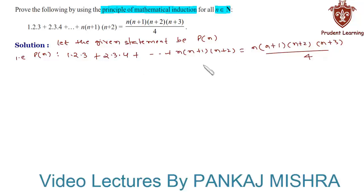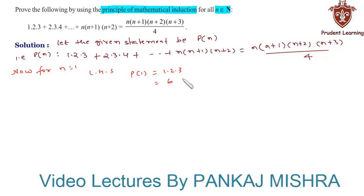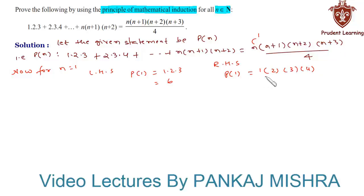In our first step, we check whether the given equation holds true for n = 1. On the left-hand side, P(1) = 1·2·3 = 6. On the right-hand side, substituting n = 1 gives 1·2·3·4 divided by 4; the 4s cancel, leaving 1·2·3 = 6. Hence P(1) = 6 for both LHS and RHS, so P(1) is true.